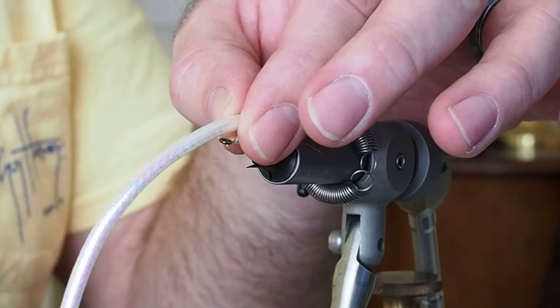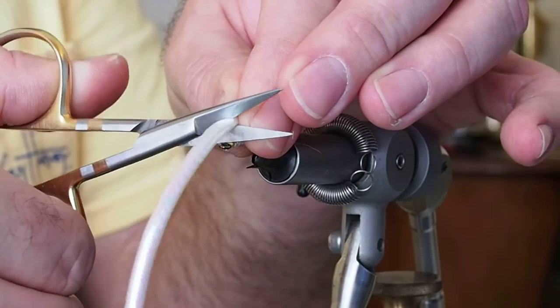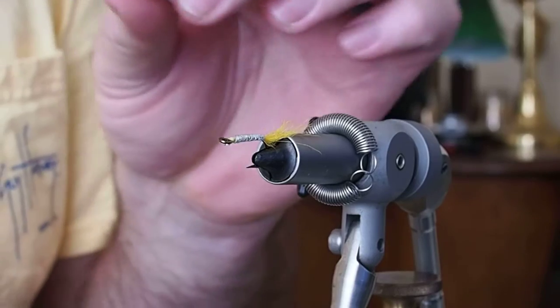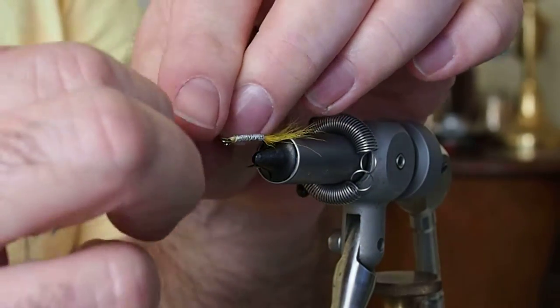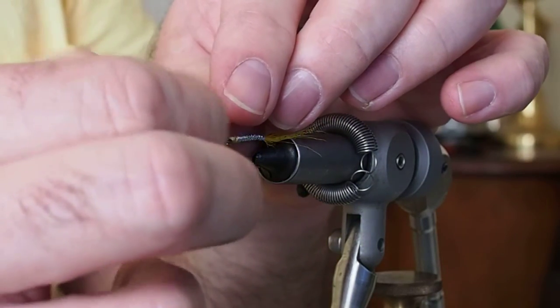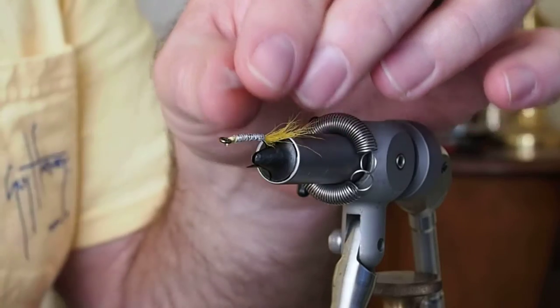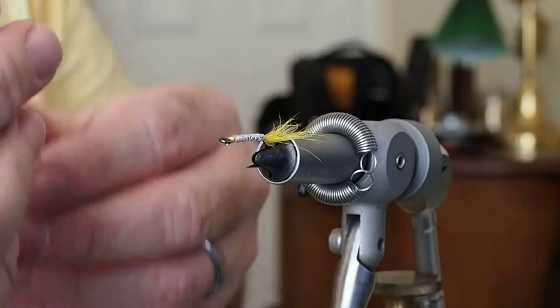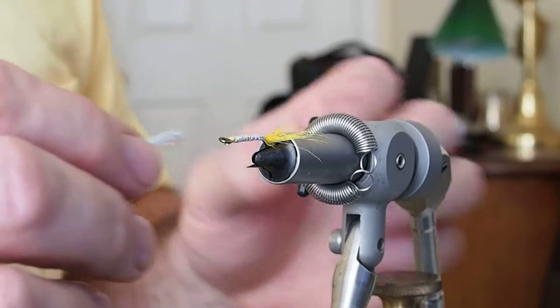And then you just want to pull the nylon rope out of it. So you end up with this hollow body just like you would use on a gotcha.